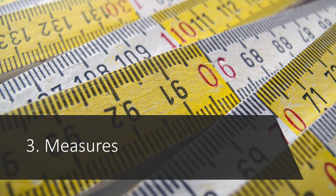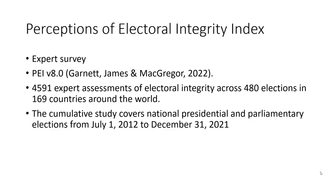How do we then measure the quality of elections? How do we know whether these principles have been upheld? The Electoral Integrity Project runs the Perception of Electoral Integrity Index. This is an expert survey where we ask experts about the quality of elections around the world in each specific country. The data is freely available to download via our website. The dataset in total covers over 4,500 expert assessments from 480 elections around the world, covering elections from 2012 up to the end of 2021.